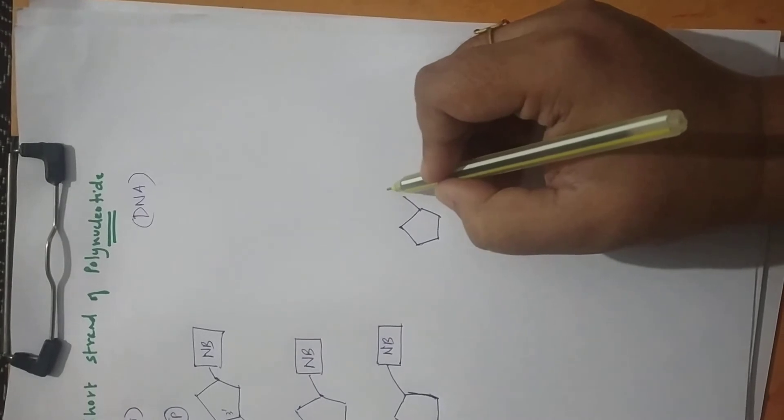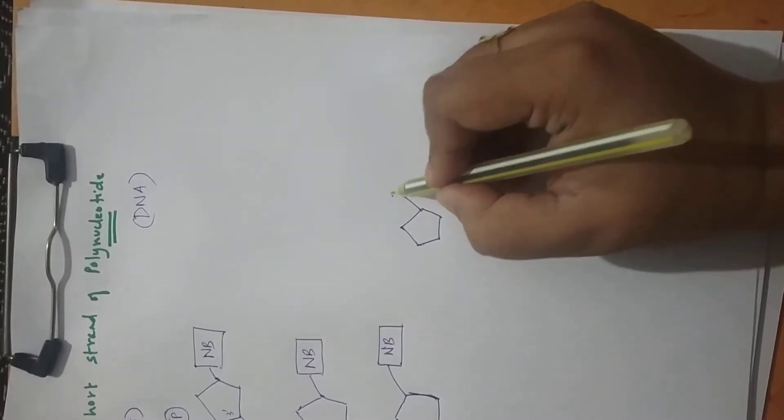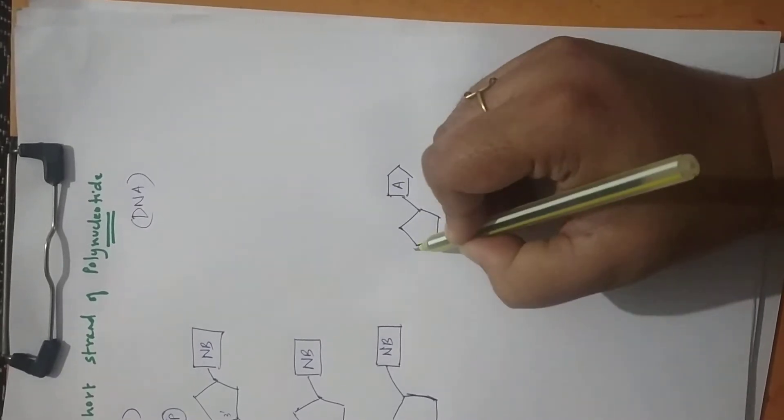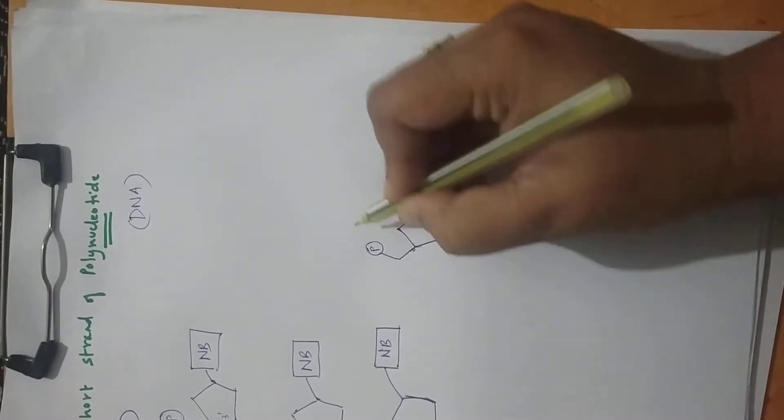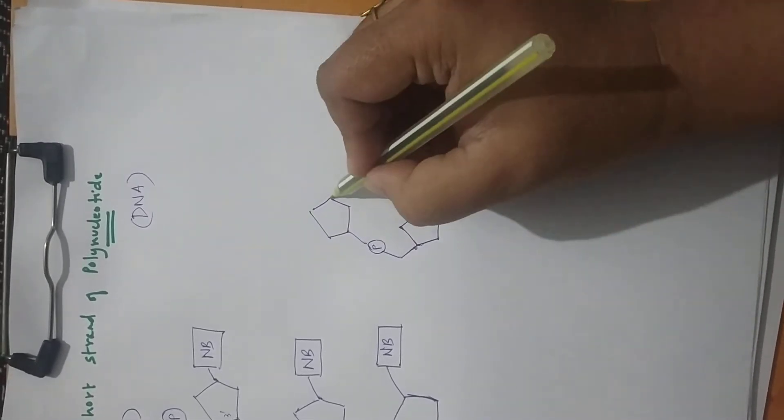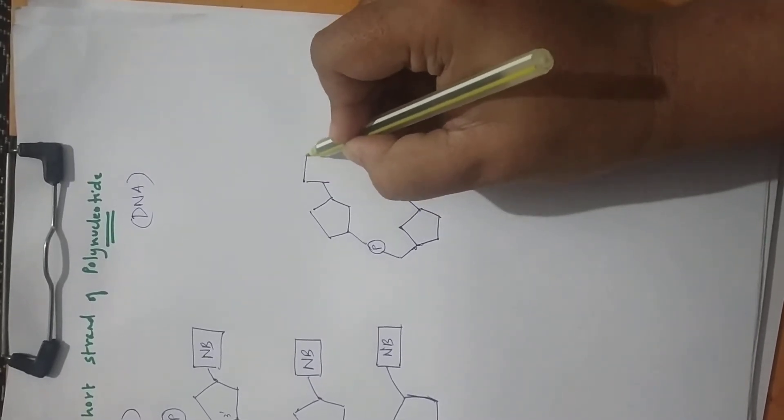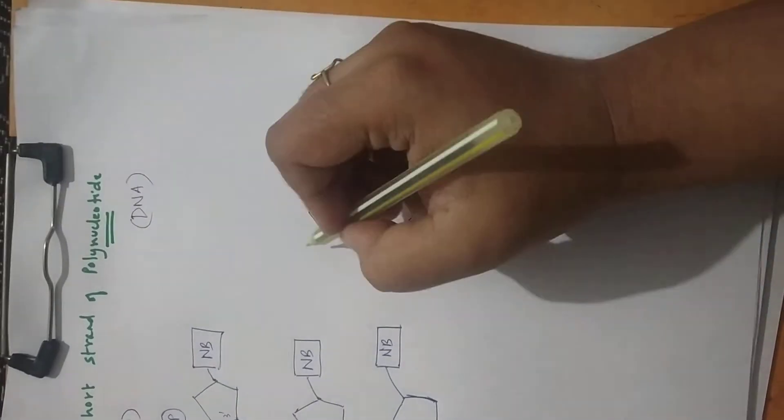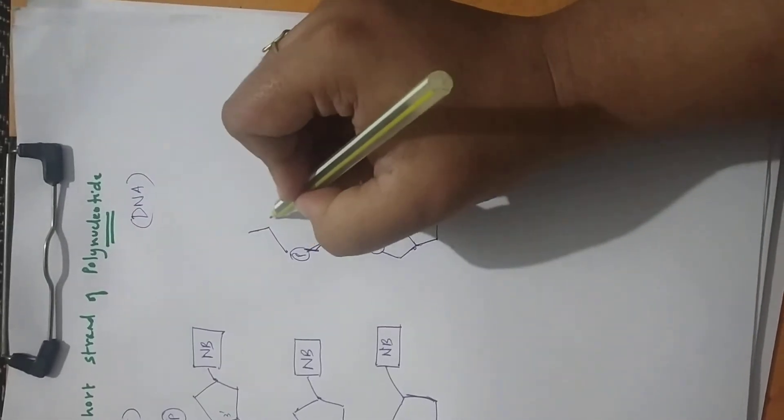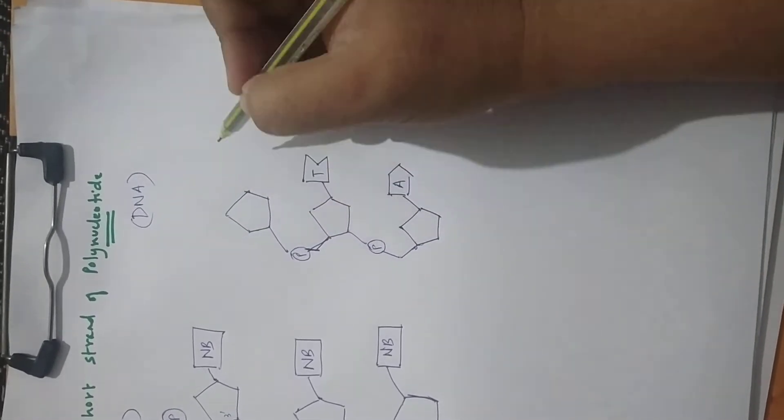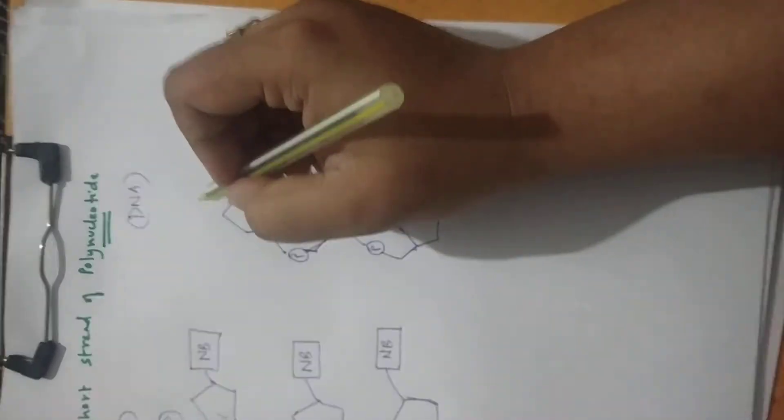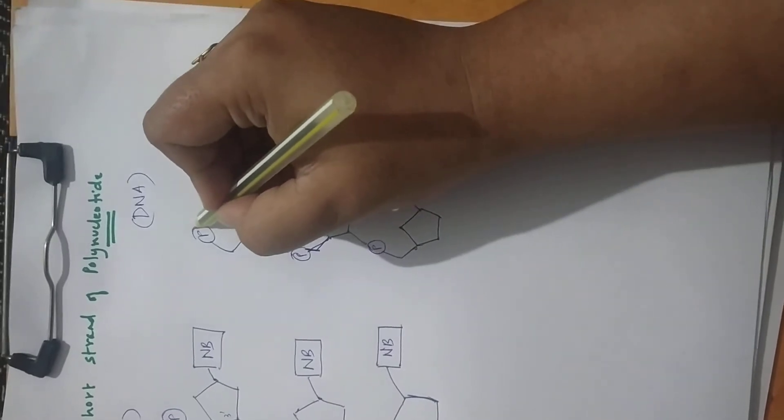This time let me write adenine or guanine to show you what base pairs we have. Adenine, guanine, thymine or cytosine. Let's say this is A. Then we have a phosphate here connected to 3'. Let's say this is thymine connected to A. This actually has to be bent. Say this is cytosine. Phosphate attached.